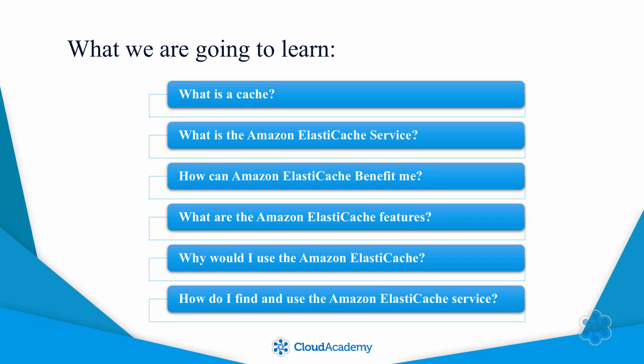So, what are we going to learn in this course? We'll discuss the concept of caching and how it relates to the Amazon ElastiCache service. We'll define and discuss ElastiCache. We'll talk about the benefits of the service, then we'll talk about ElastiCache features. Next, we'll talk about why we would use ElastiCache. And finally, we'll discuss how to locate ElastiCache in the AWS console and describe the basic steps for setting it up.